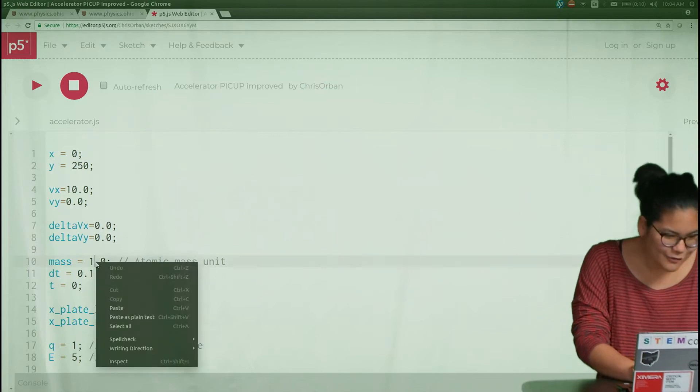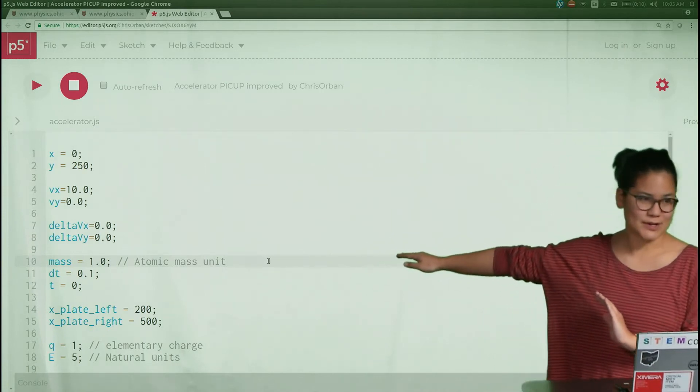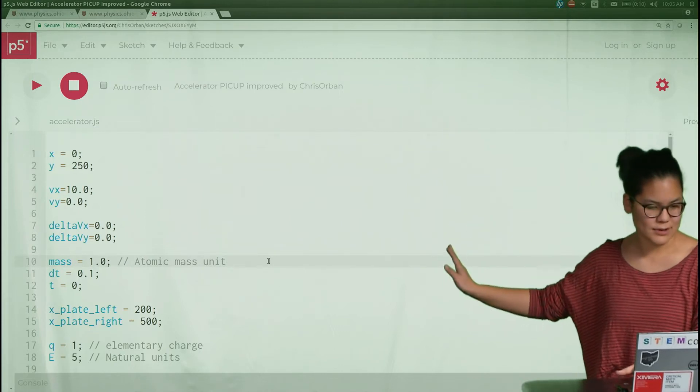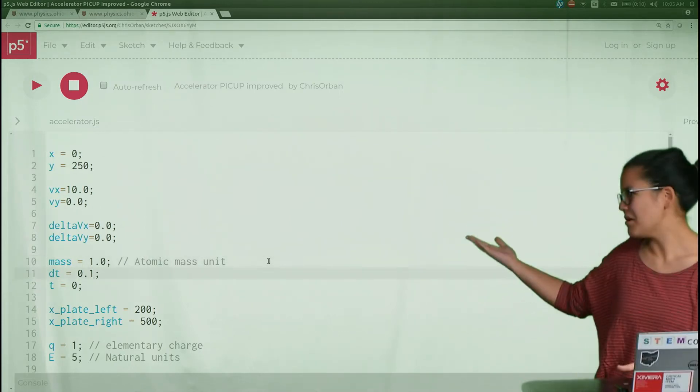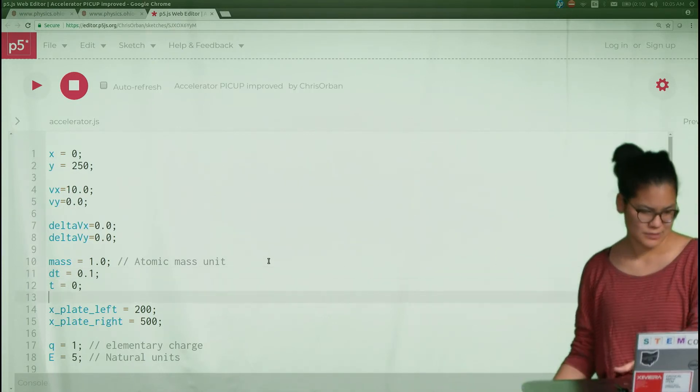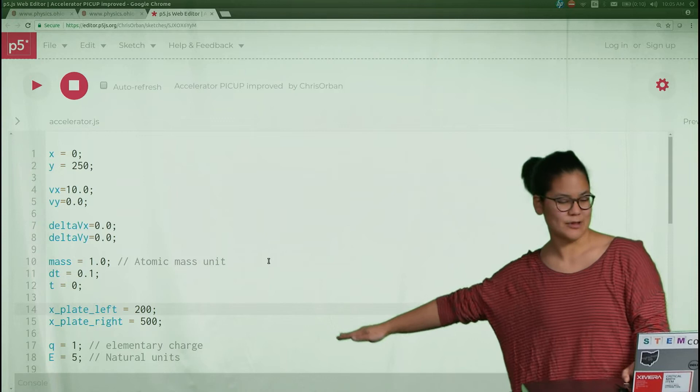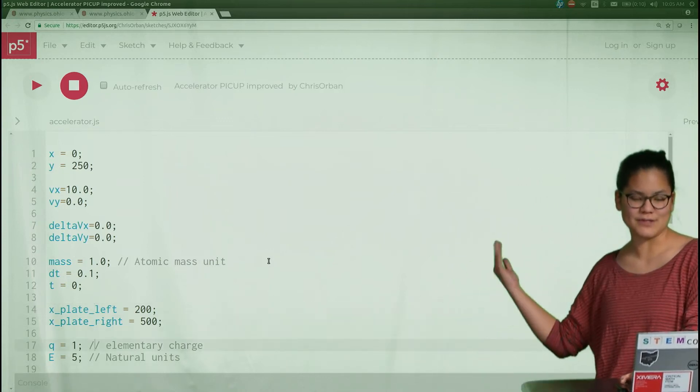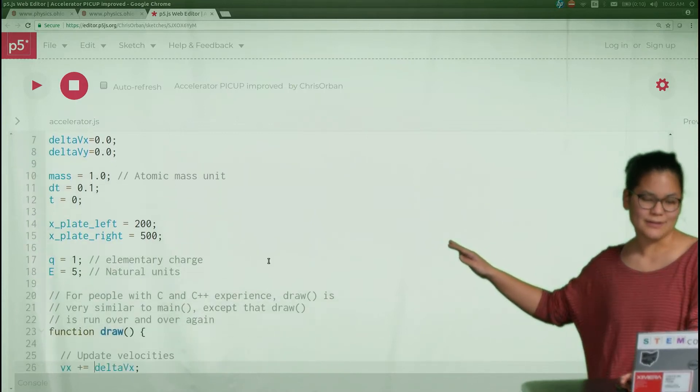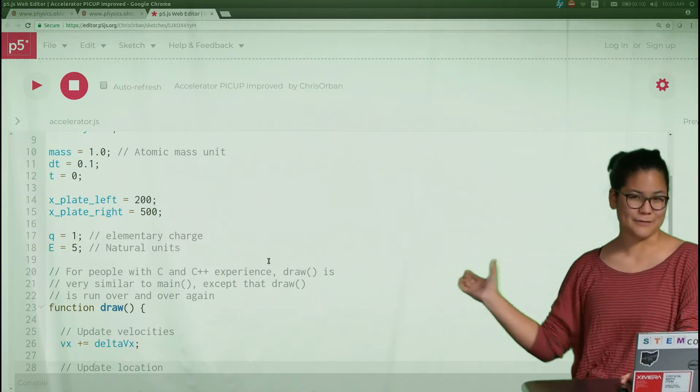We have some variables that set up the initial parameters of our particle. We have the mass of the particle here in this very convenient atomic mass unit, so we can use it to represent one proton or one neutron would be two. Then we have these variables that describe the placement of our capacitor plates. They're at two hundred and five hundred with a separation of three hundred. This little q here is the charge of our incoming particle and the big E is the strength of that electric field.